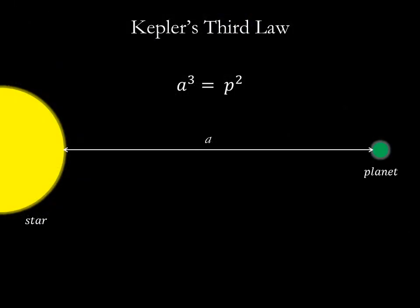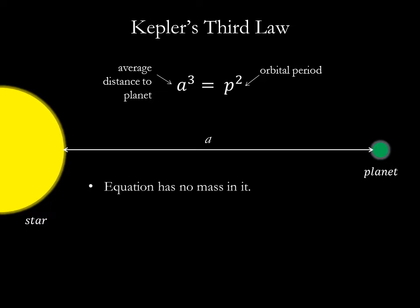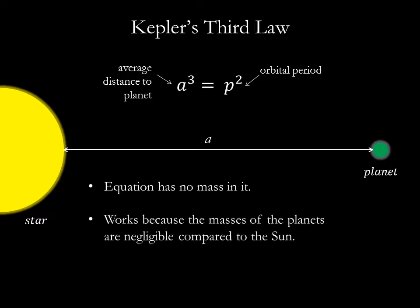Remember Kepler's third law from earlier in the semester? Kepler found that for our solar system, a planet's average distance from the Sun cubed is equal to the planet's orbital period squared. There's no mass in this equation, but it works just fine for our solar system because the masses of the planets are so much less when compared to the Sun.